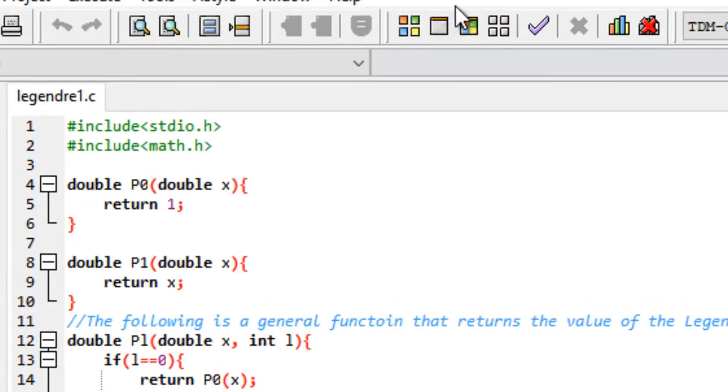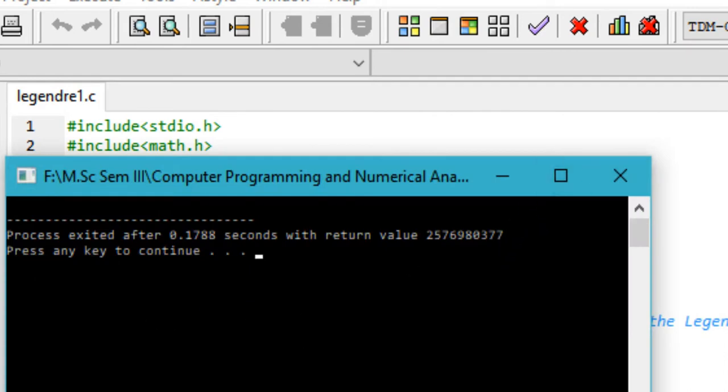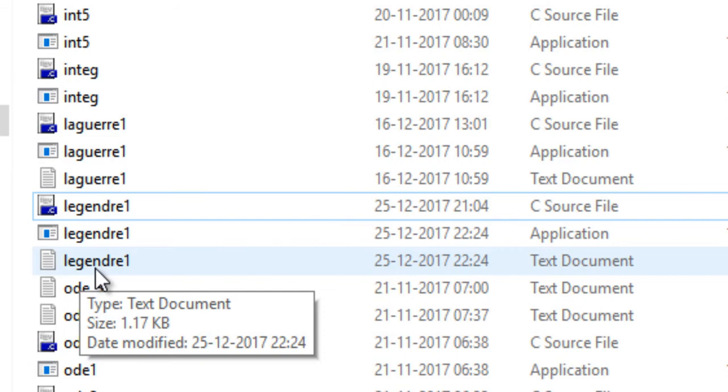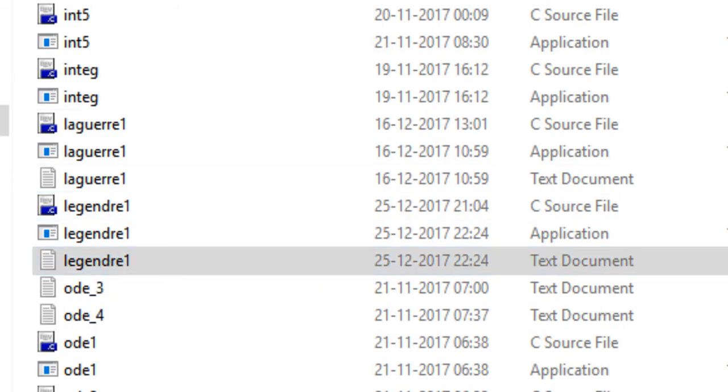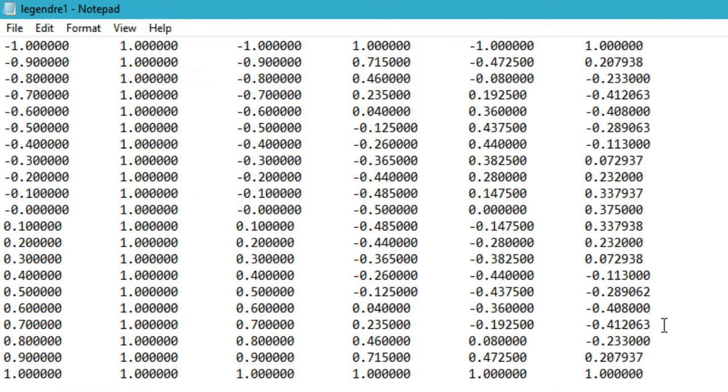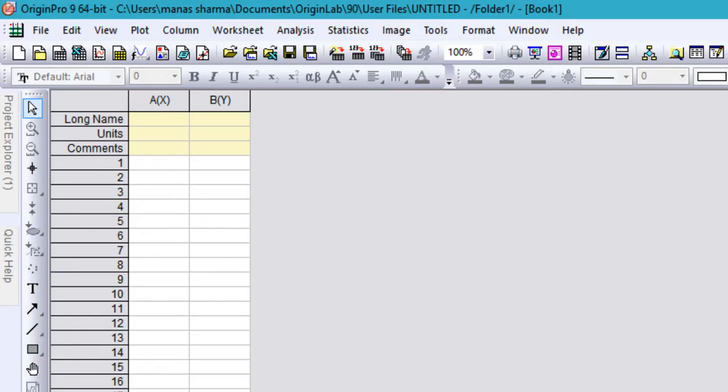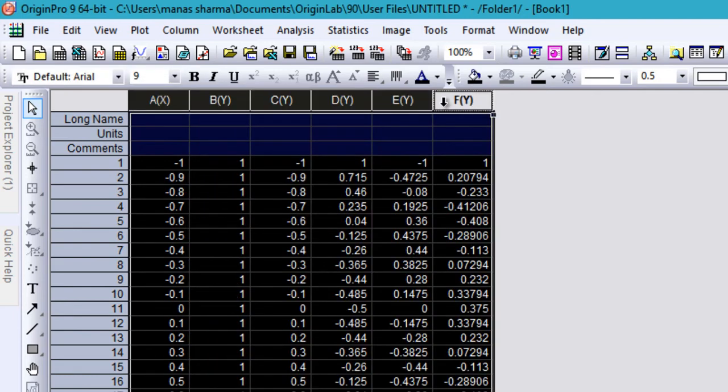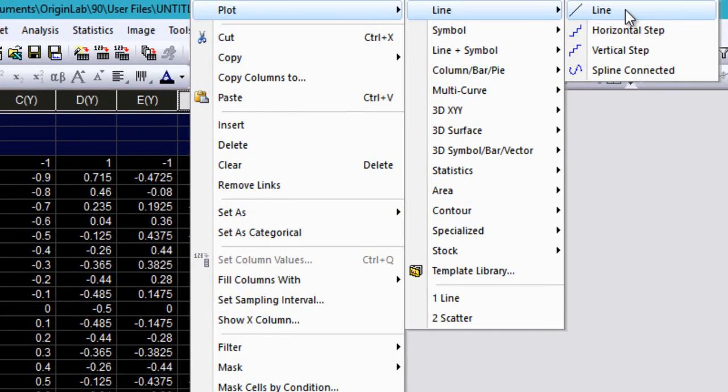Now we will go ahead and run this program. The program runs successfully. If it ran successfully, then right where you had the program you would have a file called legendre1 created. When you open this file, you can see that all the values have been created nicely and there are no NaN or infinite values. Go ahead and select all these and plot them on your favorite graphic software. For my purposes, I'm using Origin.